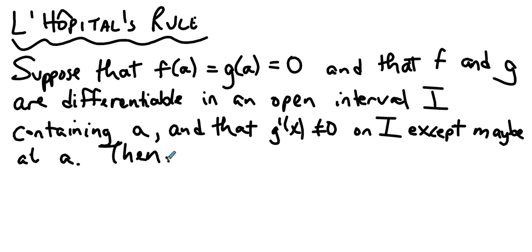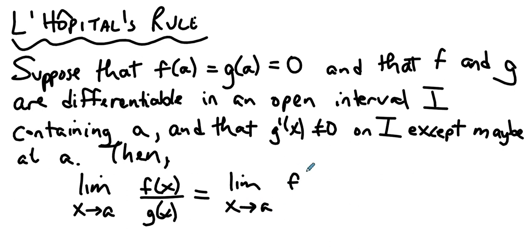Then, if we're looking for the limit as x approaches a of f of x over g of x, then that limit is the same as the limit as x approaches a of f prime of x over g prime of x if the latter limit exists.